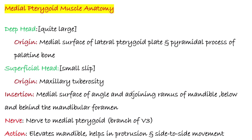Medial pterygoid muscle has a small superficial head and a large deep head. This muscle arises from the medial surface of the lateral pterygoid plate and maxillary tuberosity. It inserts on the medial side of the mandible, below and behind the mandibular foramen. It is supplied by the nerve to the medial pterygoid, a branch of the mandibular nerve. Its action is similar to the masseter: it elevates and slightly protrudes the mandible.